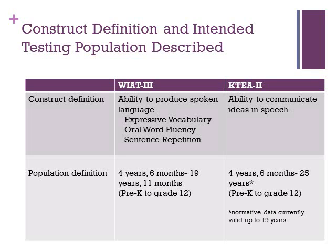The WIAT-3 is an individually administered achievement test designed for students 4 years 6 months to 19 years 11 months. It defines the construct of oral expression as the ability to produce spoken language, and it includes expressive vocabulary, oral word fluency, and sentence repetition.